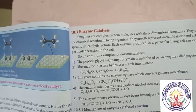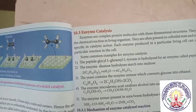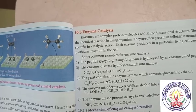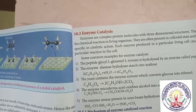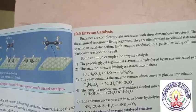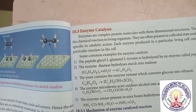Some common examples: the peptide glycol L-glutamyl L-tyrosine is hydrolyzed by an enzyme called pepsin. The enzyme diastase hydrolyzes starch into maltose.